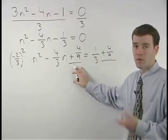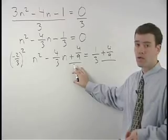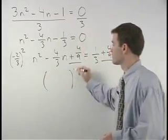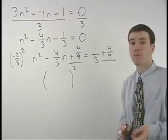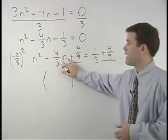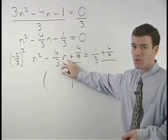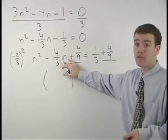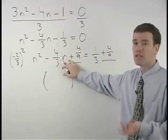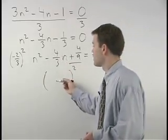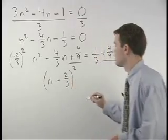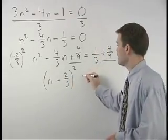On the left, we can factor this perfect squared trinomial as a binomial squared. And remember the binomial will use half the coefficient of the middle term in the trinomial. And we've already determined that half of negative 4 thirds is negative 2 thirds. So we have n minus 2 thirds squared equals,